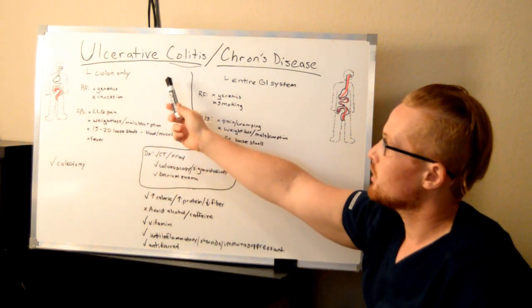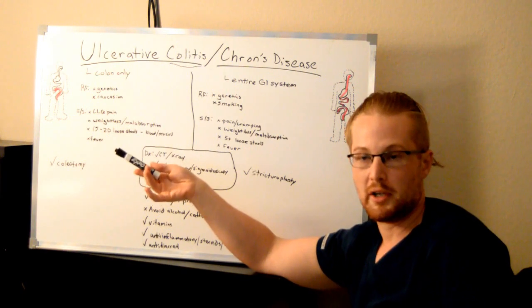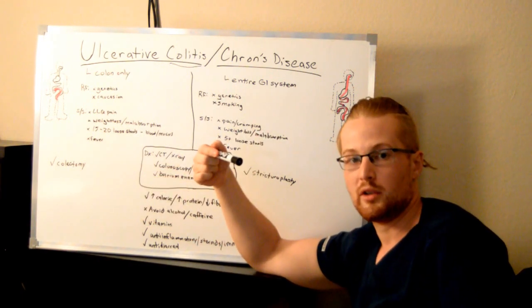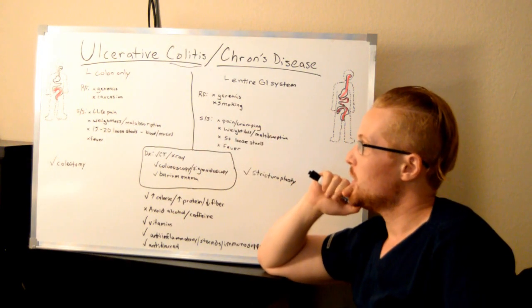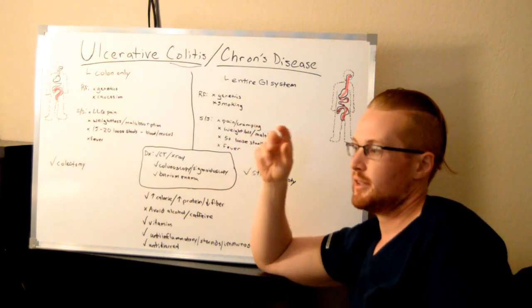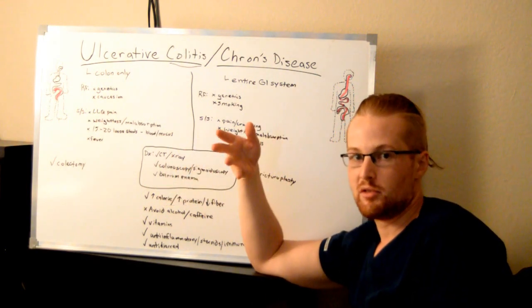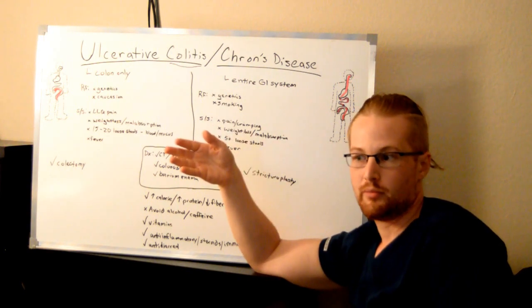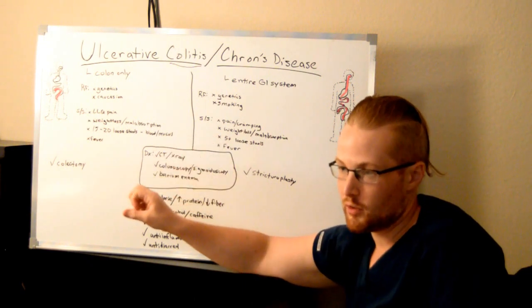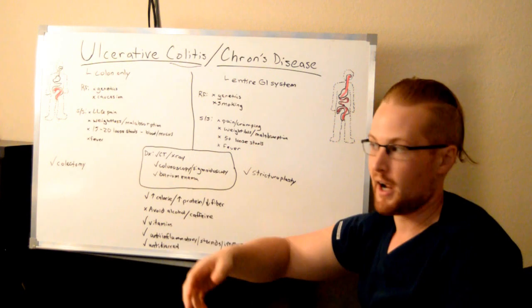For treatment: since Ulcerative Colitis is only in the colon, if you remove the colon, there's nothing left to ulcerate. So you can do a colectomy — where they remove the large intestine — and the patient will have an ostomy. Instead of using the anus for bowel movements, waste goes through a pouch attached to the patient's body, ducted to an artificial opening on the outside of the skin on the abdomen.